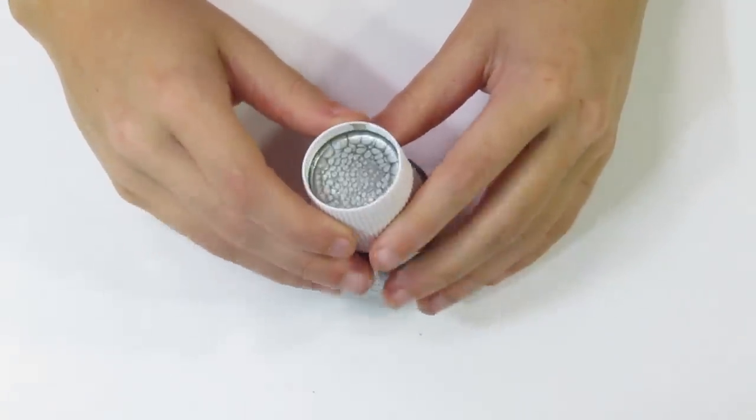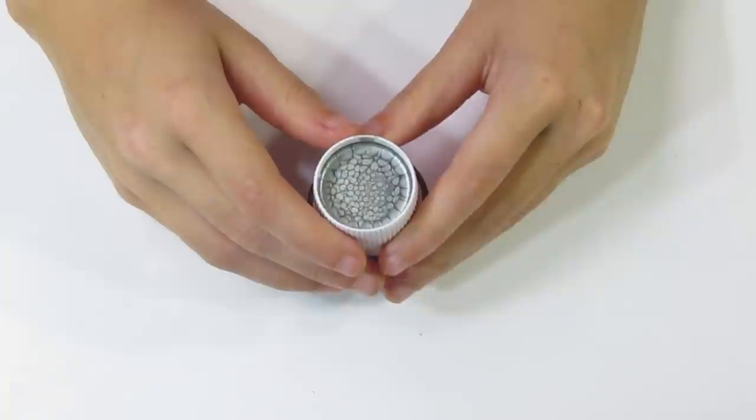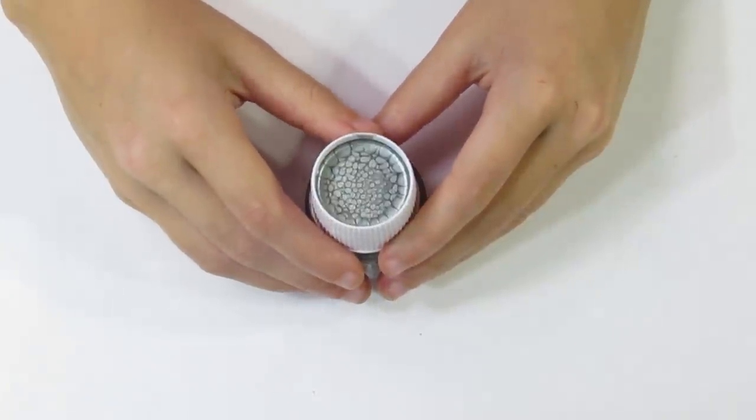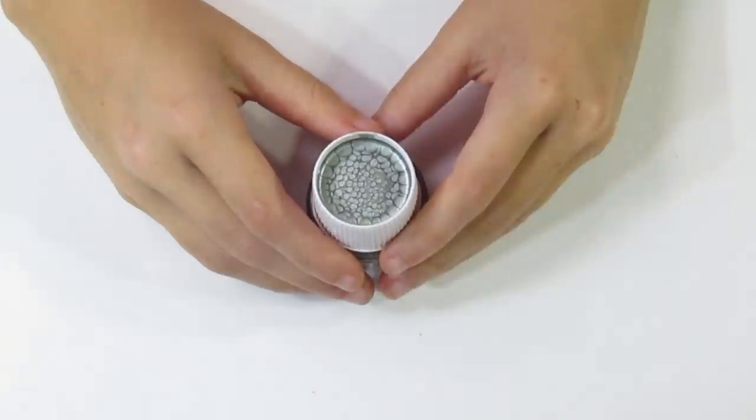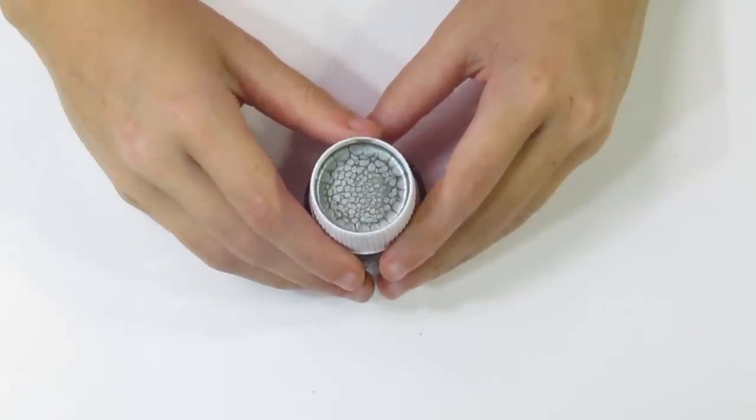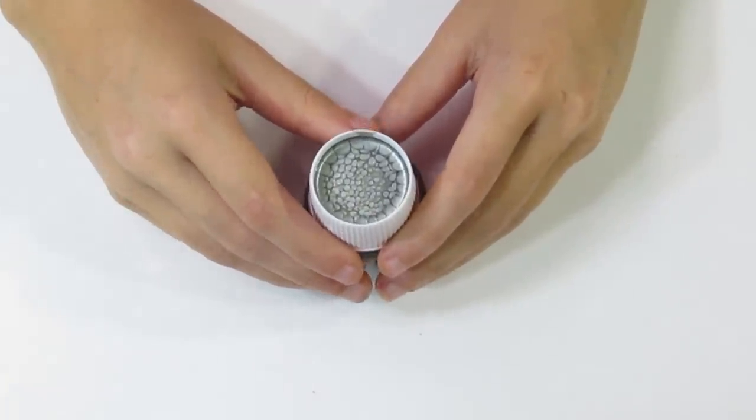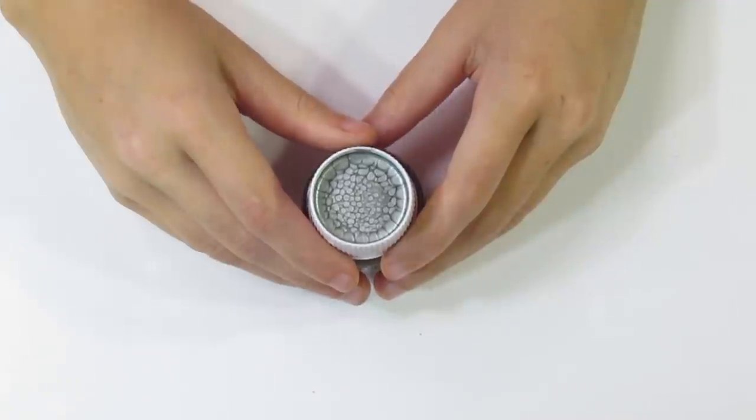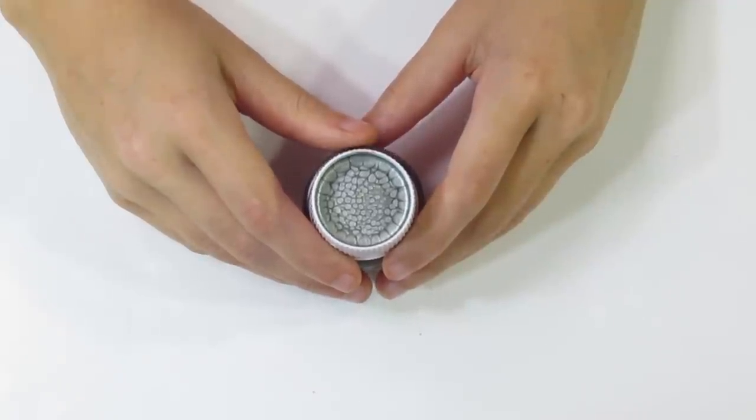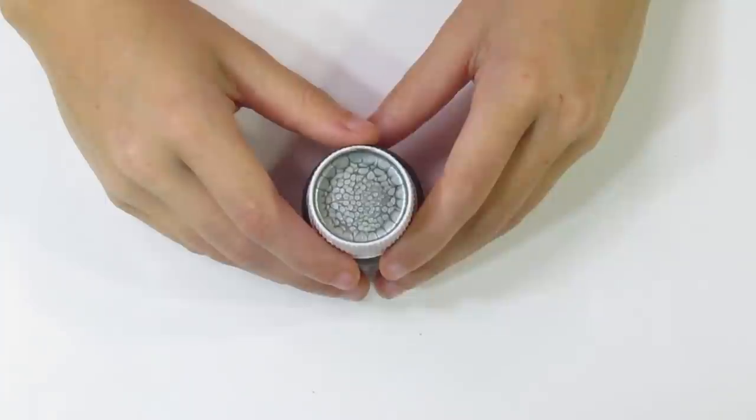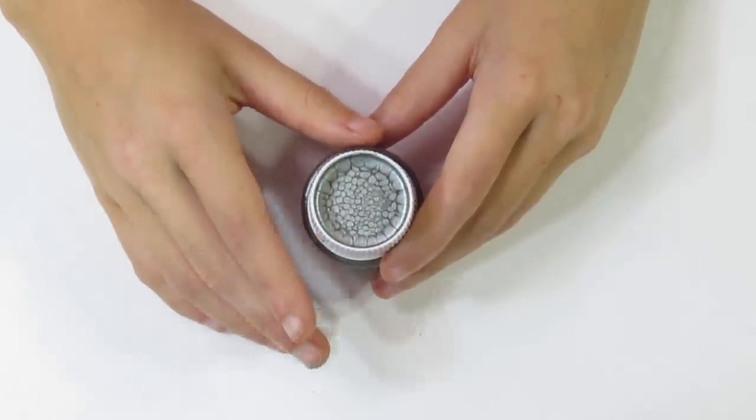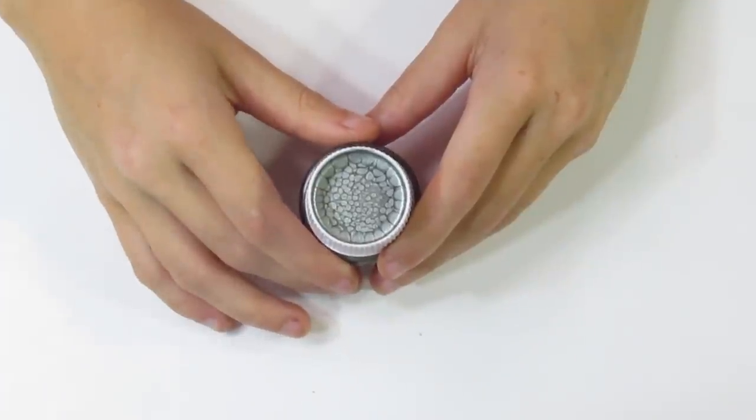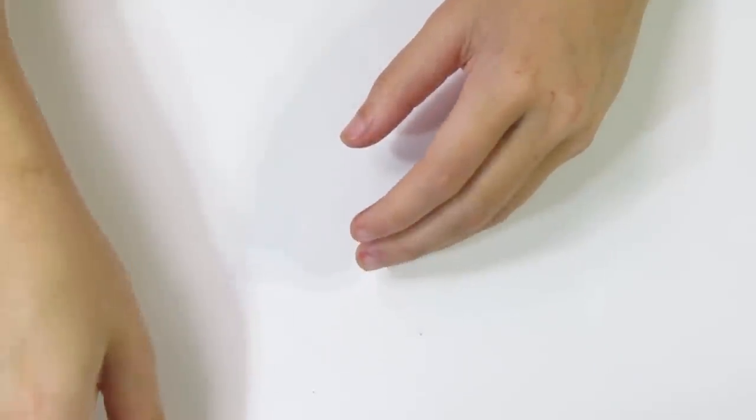And another thing that you want to do before you start using your Pebeo paints is just make sure that your piece of polymer clay is completely finished before you work with the Pebeo paints. Because although I found that you can bake the Pebeo paints the baking will make it yellow and it will also take away some of the effect so you don't really want to be baking it. So you want to make sure that your piece is completely finished before you put the Pebeo paint on.